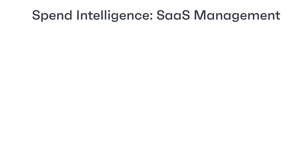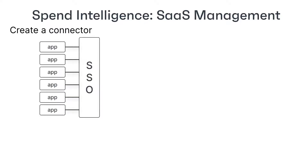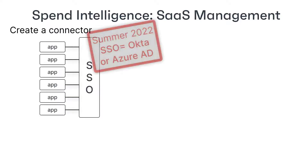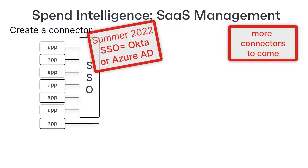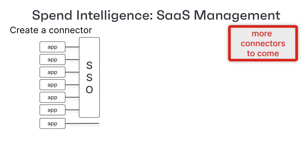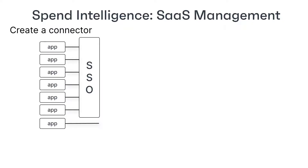The first thing to do is to create a connector to your SaaS subscriptions. This can either be a connector to a single sign-on subscription or a connector to a specific SaaS application. If you use multiple connectors the data is merged to give you a richer experience, so the more of these connectors you set up the better.